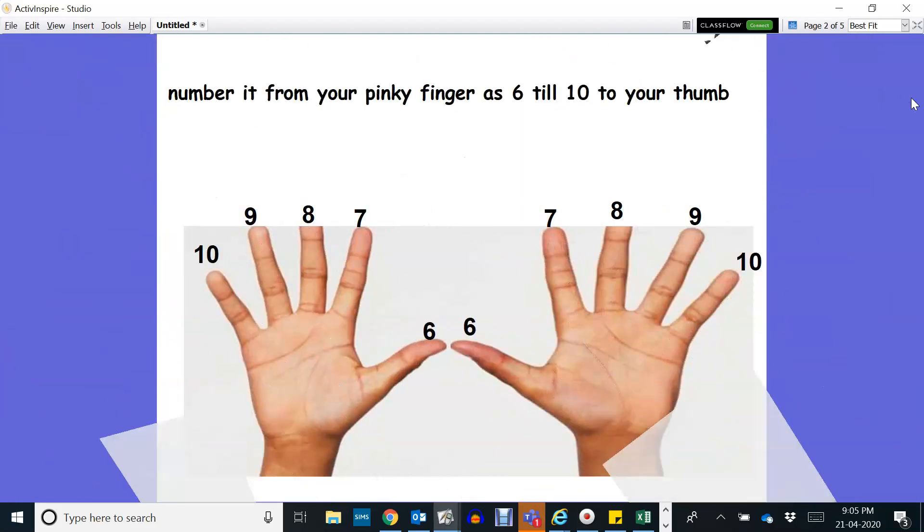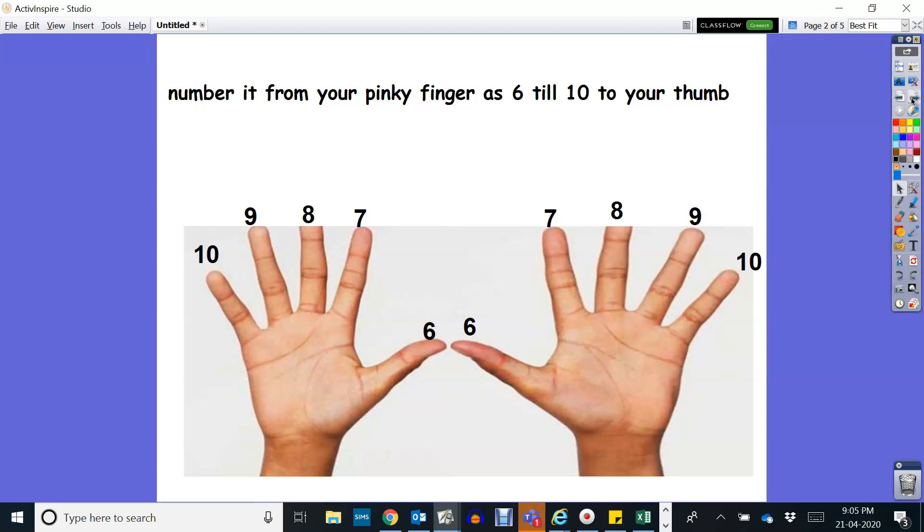Supposing you already have your fingers, you have to number them from 6 to 10. Starting from your thumb, that is 6, 7, 8, 9, 10 to your pinky finger. Same as the other.